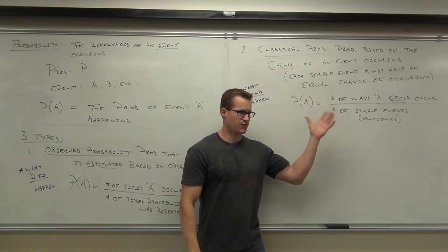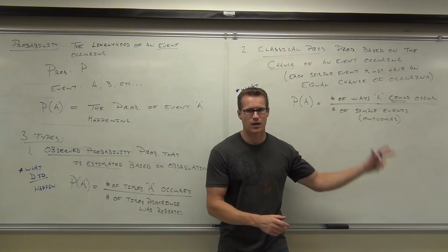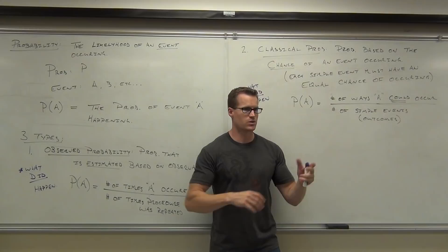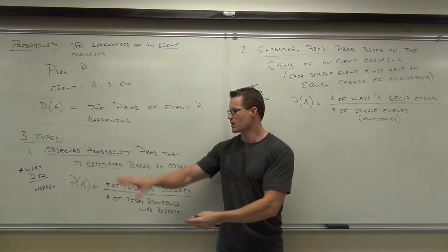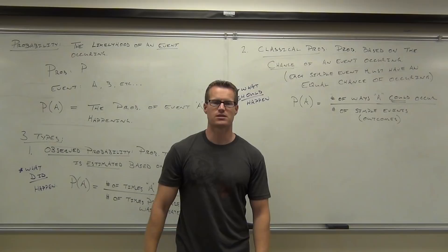If you flip a coin ten times, what should you get? Five heads, five tails — that's classical. If you actually did it, are you going to get exactly five heads and five tails? Maybe, maybe not. You might get six heads and four tails — that's what did happen. You can think about the probability — it should be five out of ten — but doing it might not give you five out of ten. Those things could line up, but they don't have to.